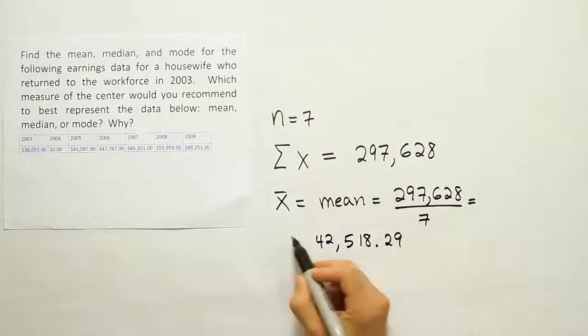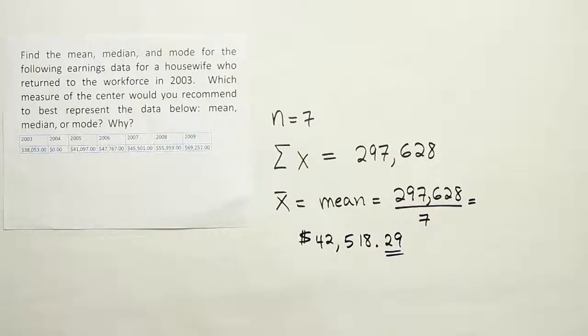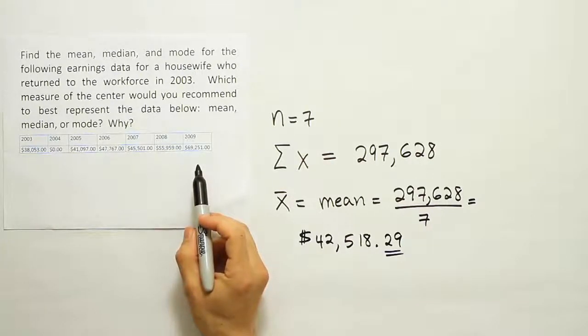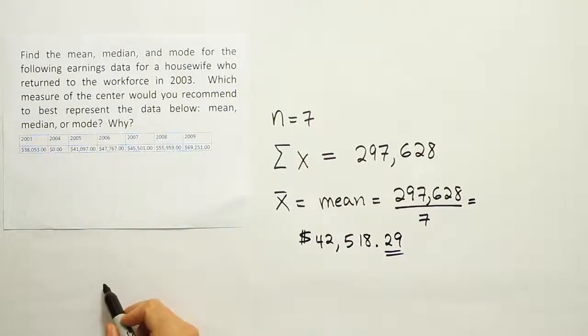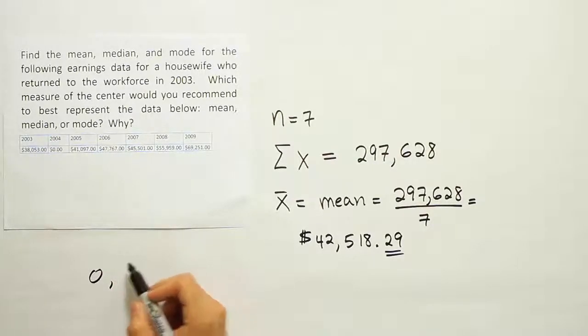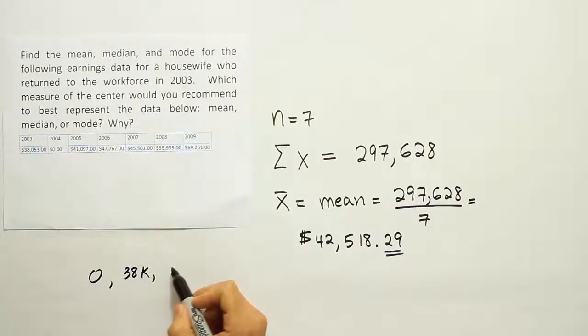That's rounding it off to the nearest penny, so that's the average. In order to calculate the median, we have to first put all of these data values in order. The first value is 0, then the next lowest number is 38K, then 41K, then 46K, then 48K.